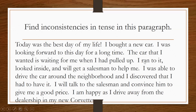'I ran to it, looked inside' — back to past tense — 'and will get a salesman to help me' — future tense. We would change 'will get' to 'got': 'I ran to it, looked inside, and got a salesman to help me.' Then: 'I was able to drive the car around the neighborhood and I discovered that I had to have it' — all past tense. Next: 'I will talk to the salesman and convince him' — future tense. We change this to 'I talked to the salesman and convinced him to give me a good price.'